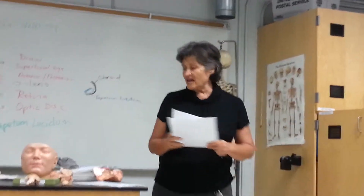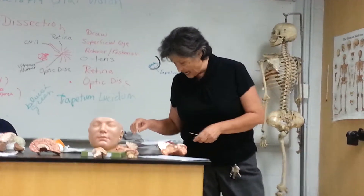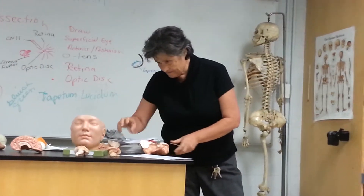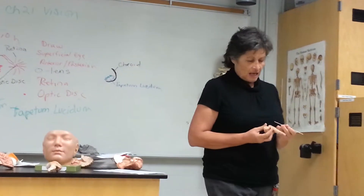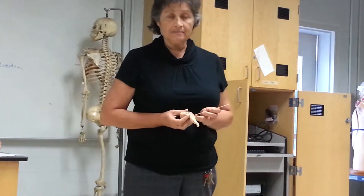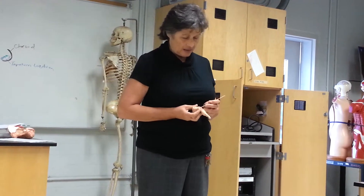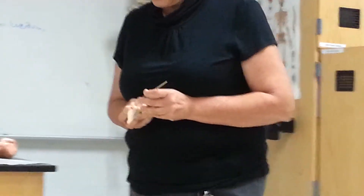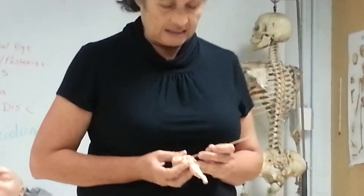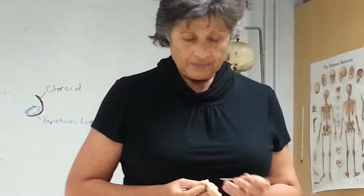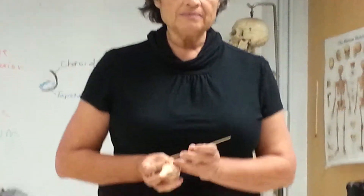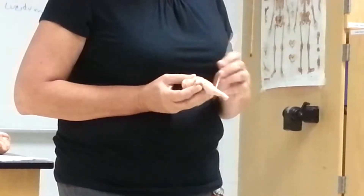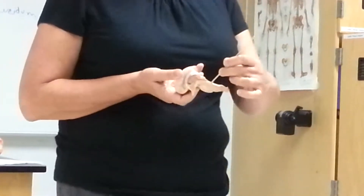The diencephalon — what does the diencephalon contain? Hypothalamus and thalamus. So here you can see the epithalamus that ends in the pineal gland, you can see the thalamus, you can see the intermediate mass of the thalamus, this is the hypothalamus — all this area. That's the optic chiasma. And here again you can see the cerebral aqueduct going to the fourth ventricle.